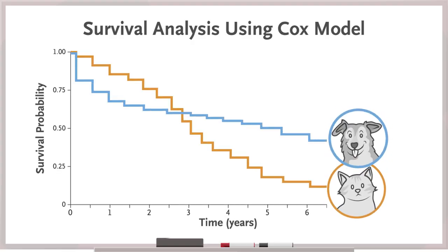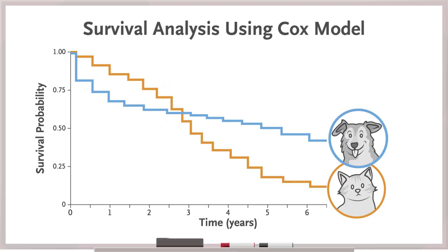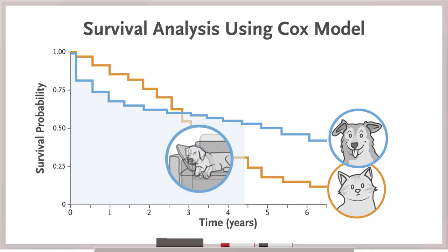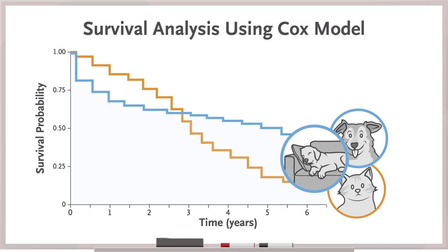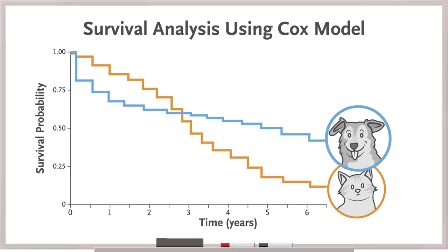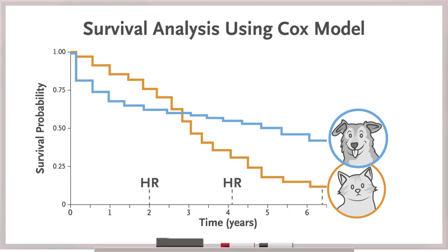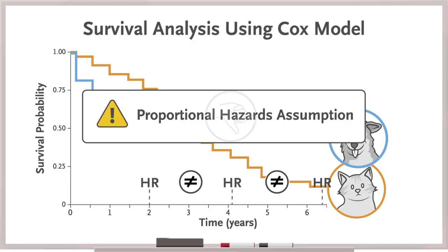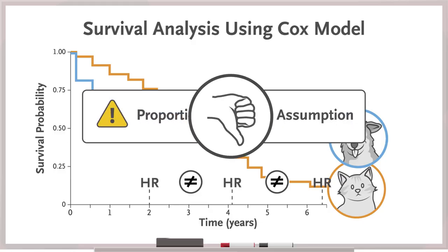Staring at your pet data, maybe the crossing curves make sense here too. You figure puppies are more destructive to couches than kittens, then canines mellow out more than cats as they age. So whether surgery versus medicine or cats versus dogs, you can't just report a hazard ratio, because that value would be different at different time points.